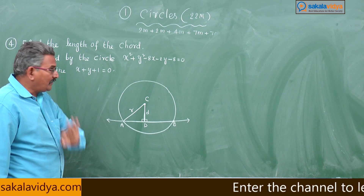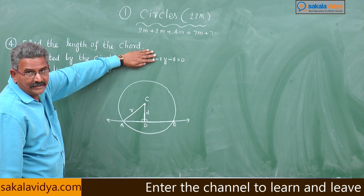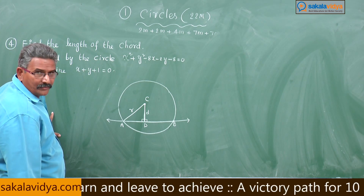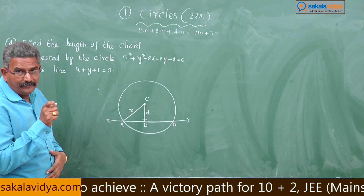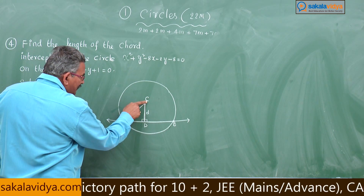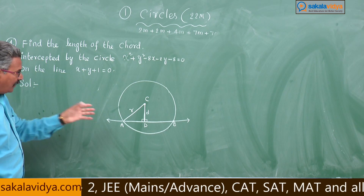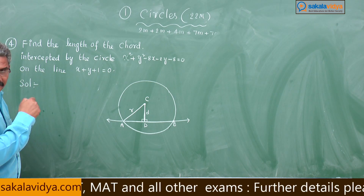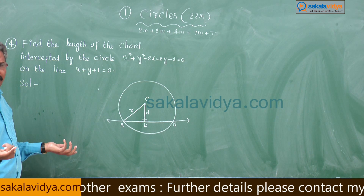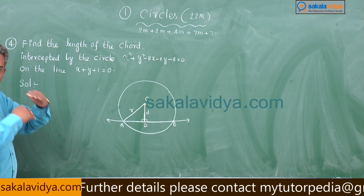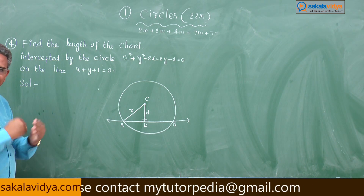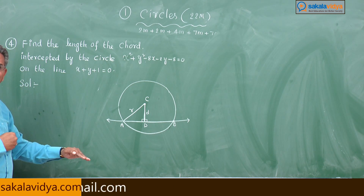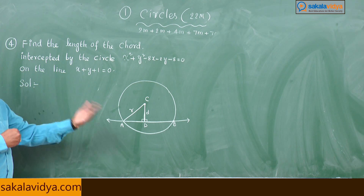Here, three values we have to find out. First, the centre and radius of the given circle. Then d — the perpendicular distance from the centre to the given line. After that, applying Pythagoras theorem we get the AD value. The length of AB is equal to 2 times AD. So the three steps are: find centre and radius, find the perpendicular distance from centre to the given line, then compute the length of the chord as 2 times AD.